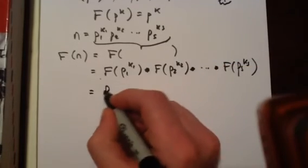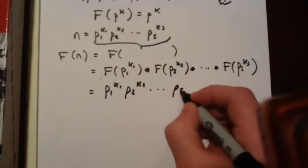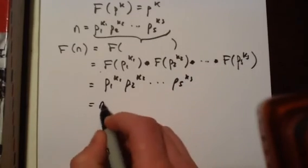So this is equal to p1^k1 times p2^k2 times ps^ks, and this is n.